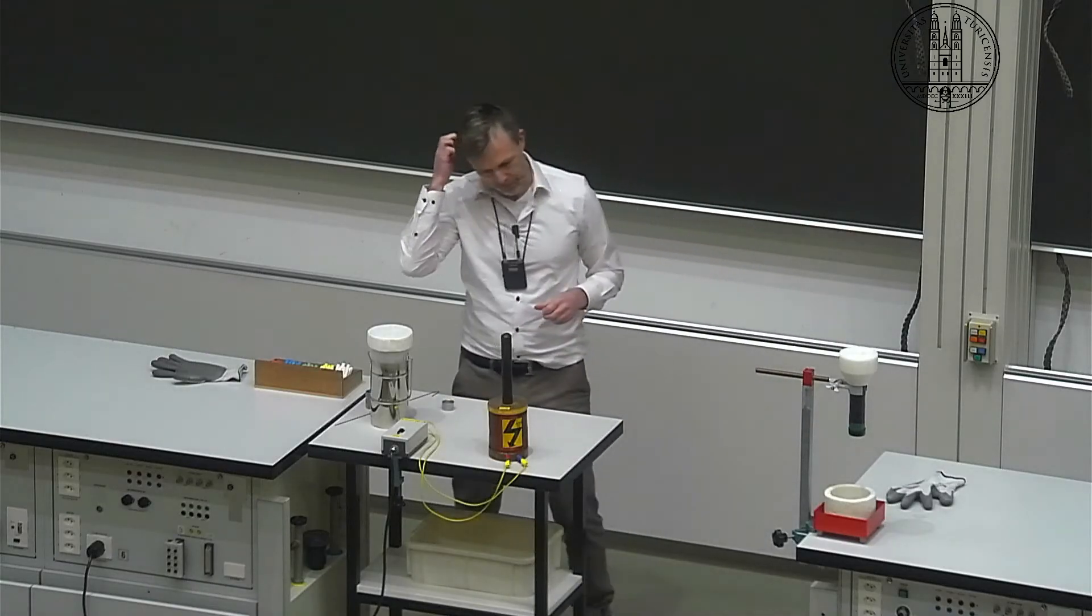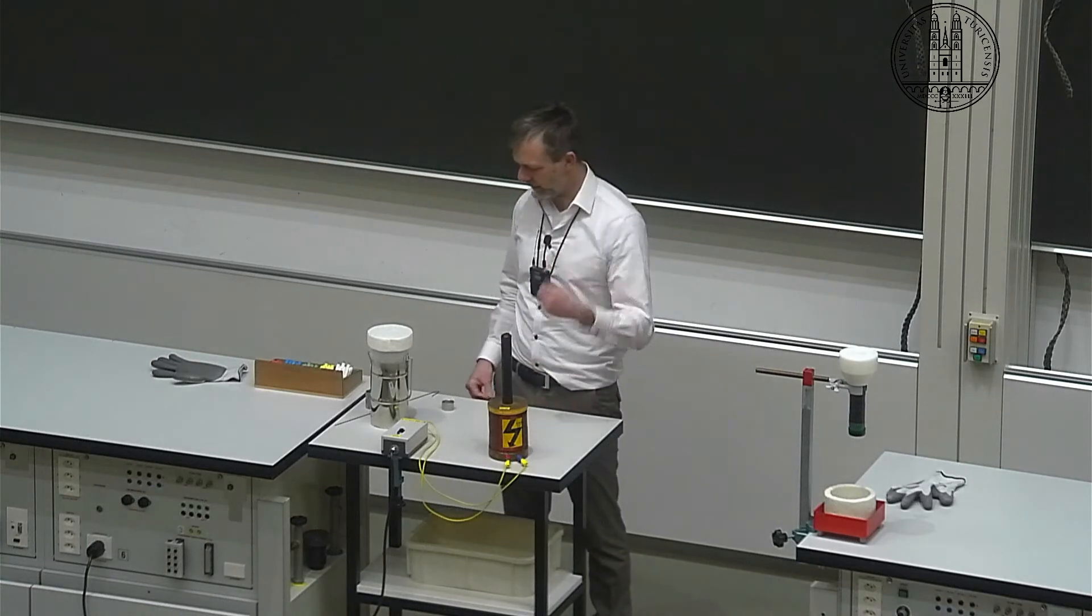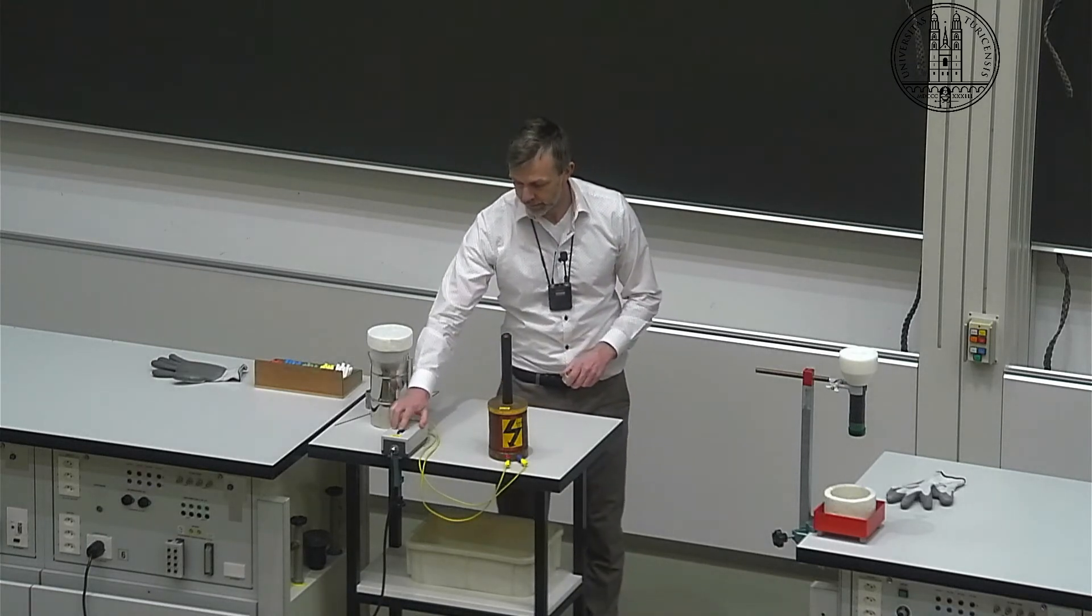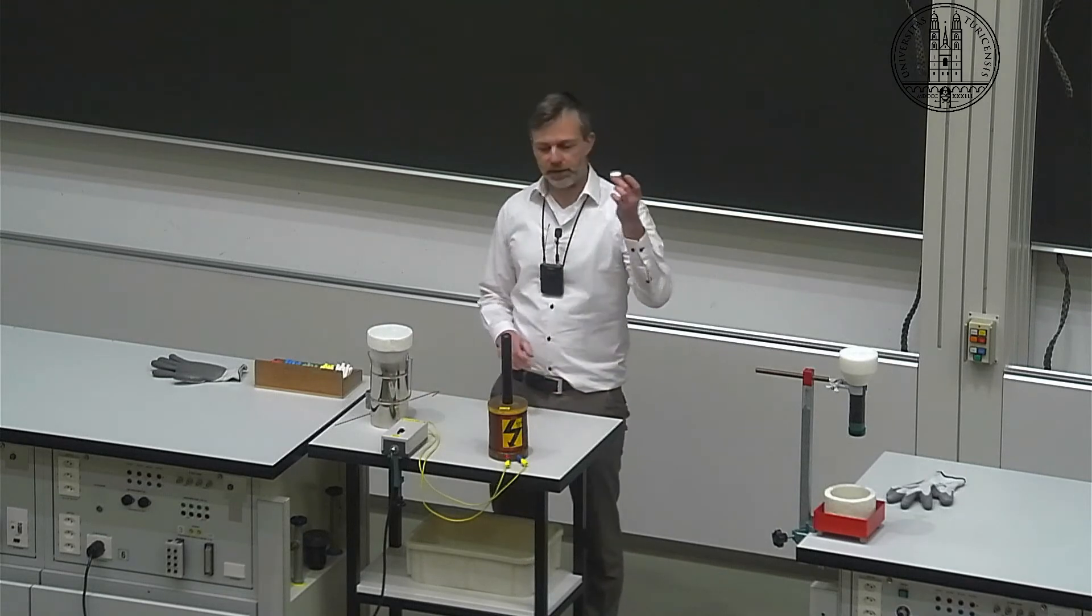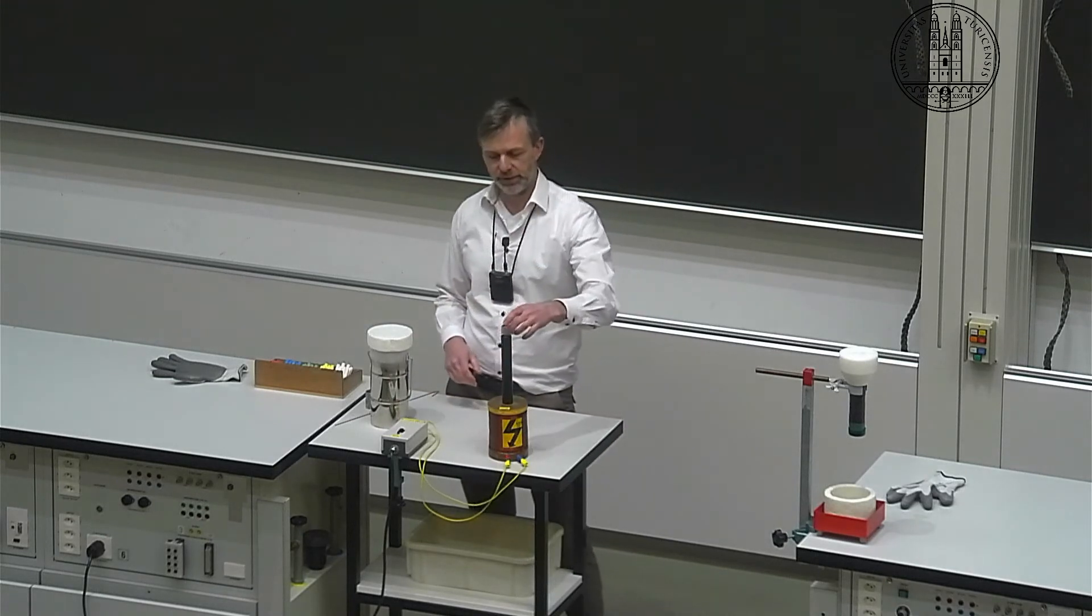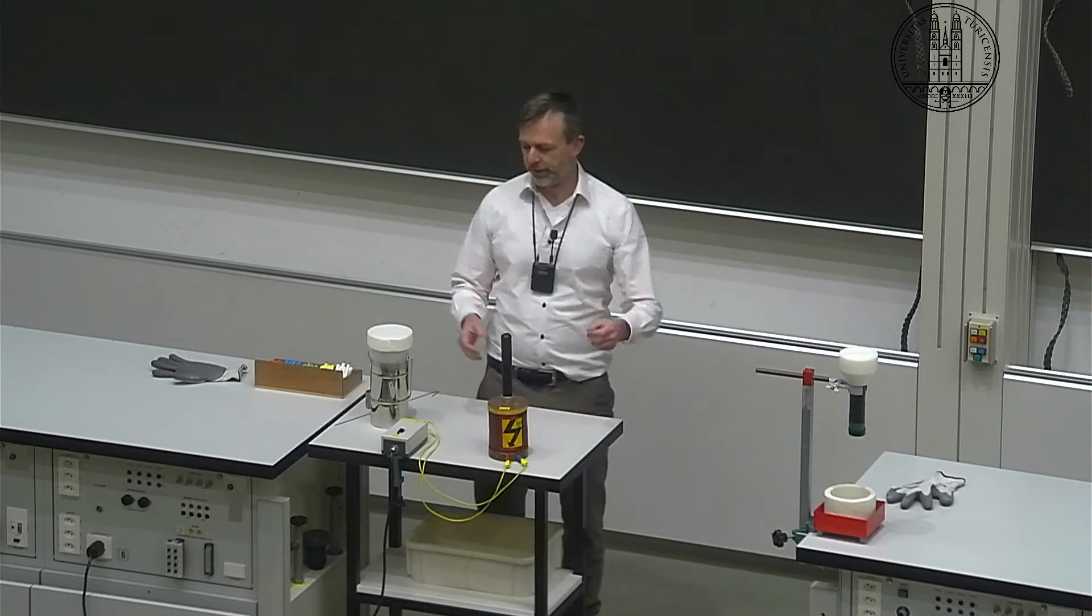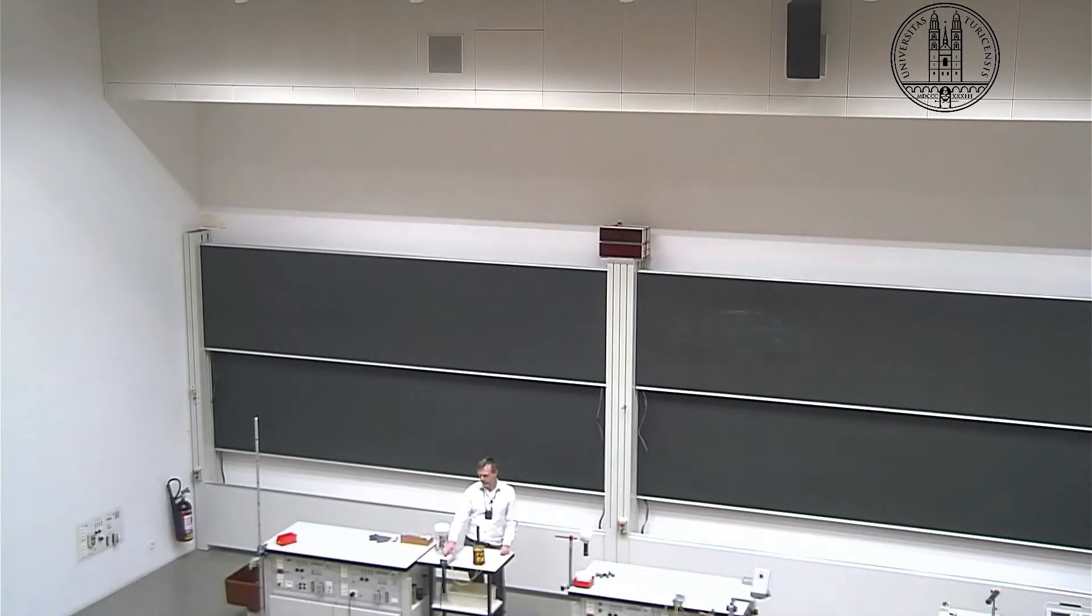So here we are. We have this solenoid which I can rapidly turn on with this button. And now I put an aluminum ring on top and we know what's going to happen here. We're going to turn this thing into a magnet and it's going to jump.